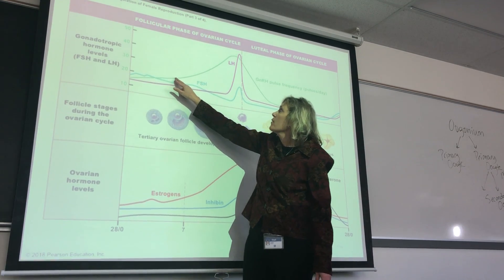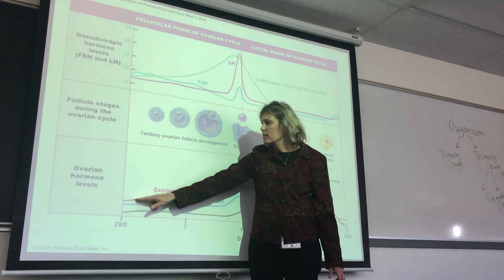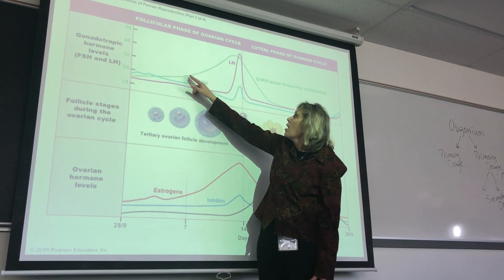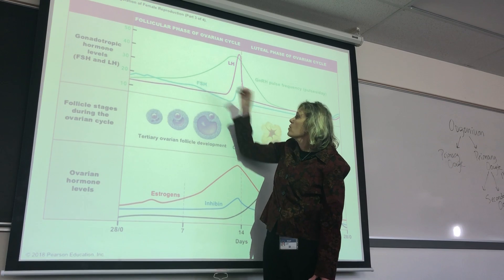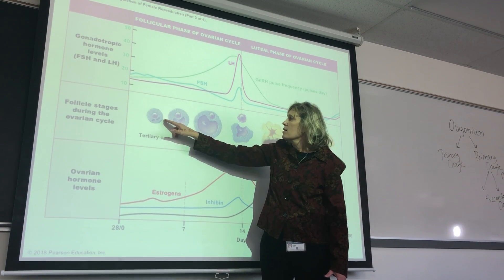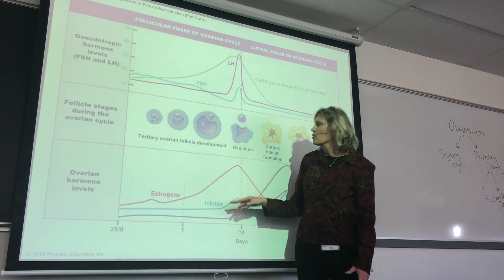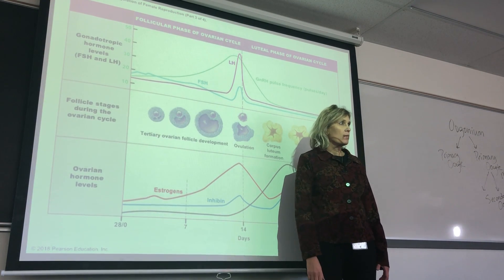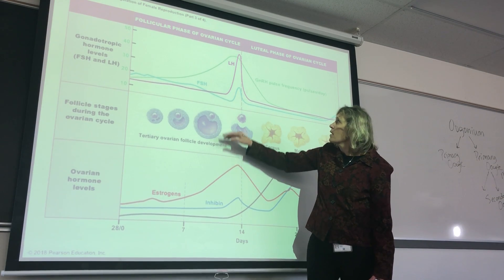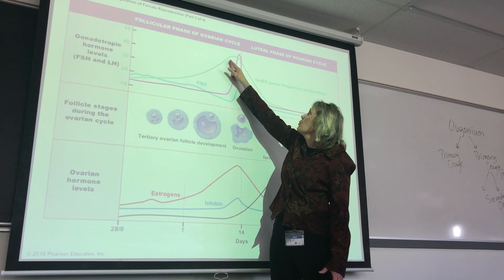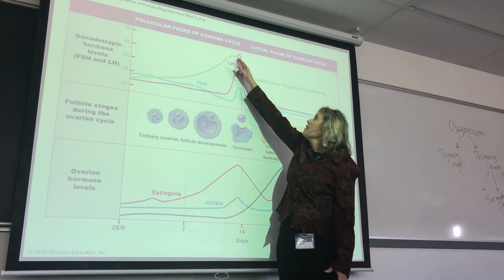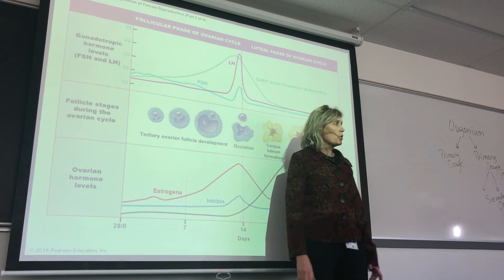The low pulsing of the gonadotropic releasing hormone keeps the estrogen levels low. Then the gonadotropic releasing hormone starts to increase as the follicle gets bigger. The follicle starts to produce estrogens, so we see an increase in estrogens. The gonadotropic releasing hormone pulsing rate gets much higher, and at its peak, it's going to cause the release of luteinizing hormone.